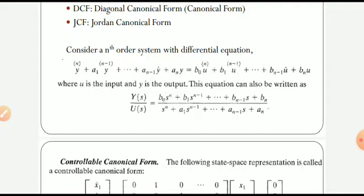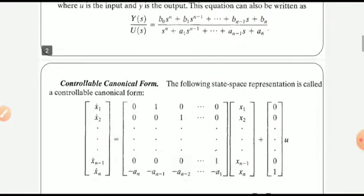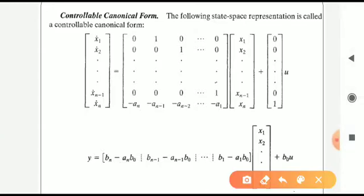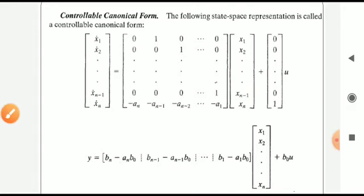Now coming to the controllable canonical form. The general state space representation is: x-dot = AX + BU and Y = CX + DU. Since it is an n-th order system, we have n state variables X1, X2, up to Xn. To fill matrix A of the controllable canonical form, it has the following format.